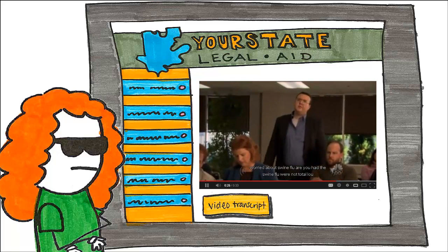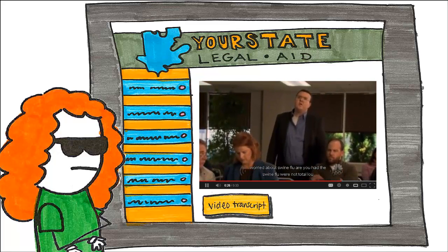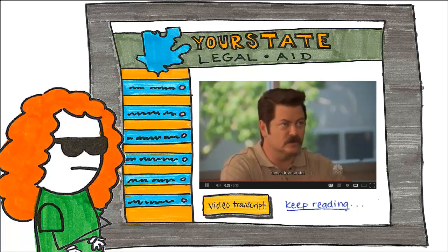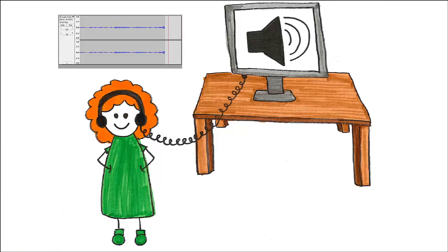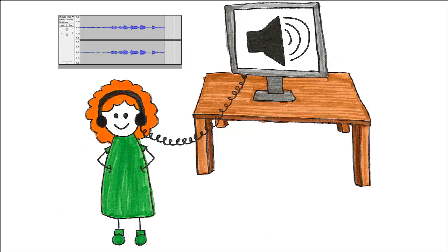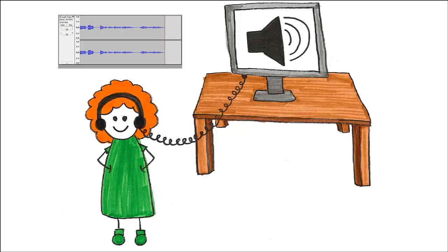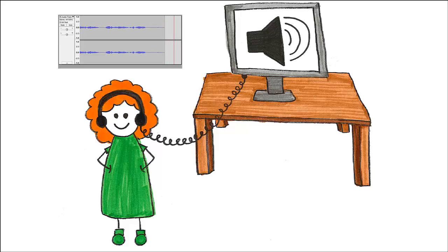Whether through a transcript, an accompanying article, or some other method. Also for audio content, WCAG advises that foreground audio is at least 20 decibels louder than background audio, and that the user should be able to adjust the volume. Basically, it should be easy to hear the video's content without too much interference.